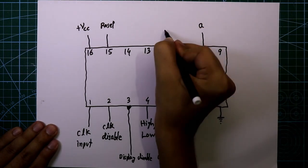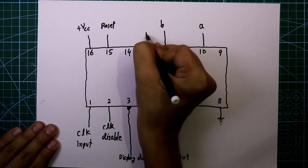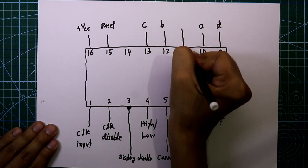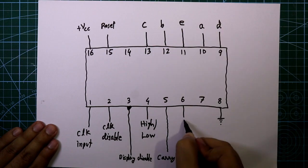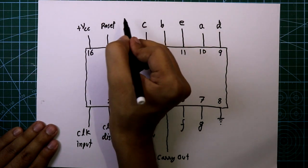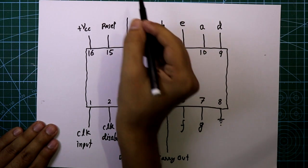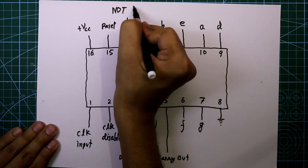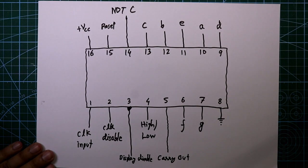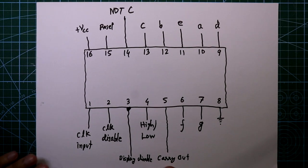Now the display pins: pin number 10 is A, pin number 12 is B, pin number 13 is C, pin number 9 is D, pin number 11 is E, pin number 6 is F, pin number 7 is G, and pin number 14 is not-C. Whenever C is low, pin number 14 will be high. We use this pin in a divider circuit, like dividing by 60 or dividing by 12.